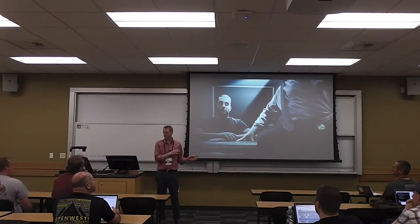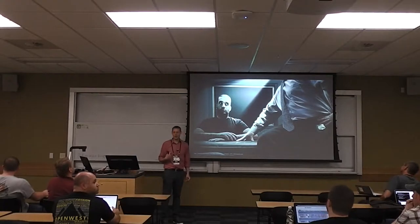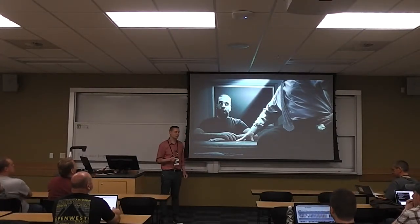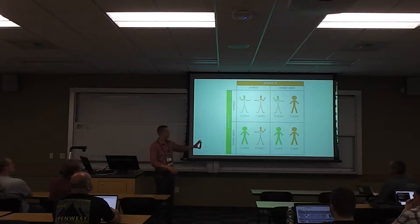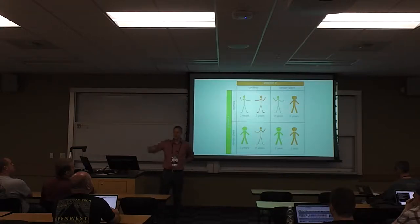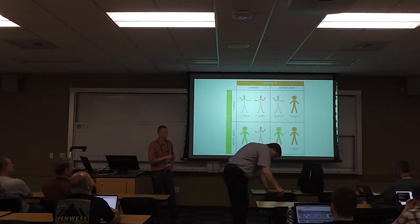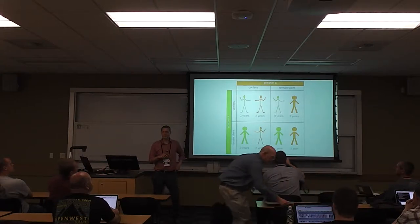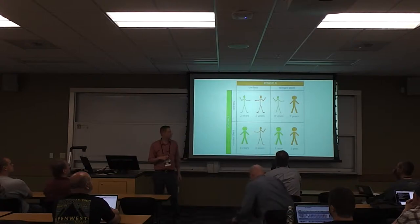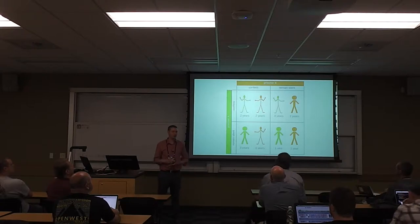So if you're this prisoner, what do you do? They've separated you, so you don't know what the other guy is doing. Is he betraying you? If so, you better say something. But if not, you can perhaps get a better outcome if you both stay quiet. Game theorists put rewards on the different scenarios. If prisoner A confesses and implicates his partner, he gets out scot-free, but his partner, who remains silent, ends up going to jail for three years. If they both confess, they both go to jail for two years. However, if they both remain silent and somehow coordinate beforehand, they both go to jail for only one year.